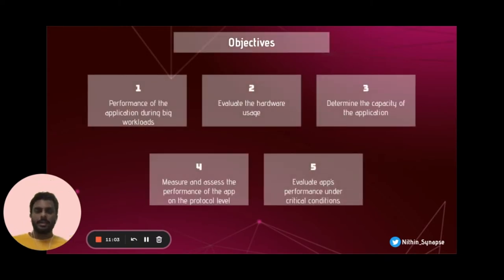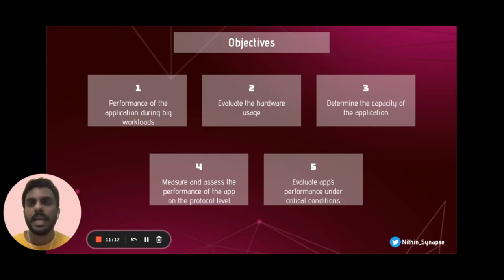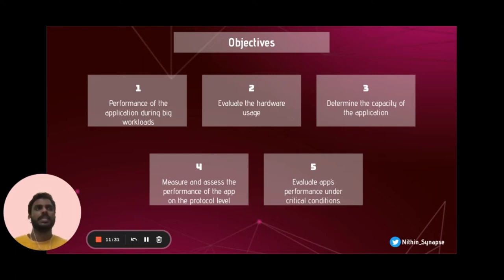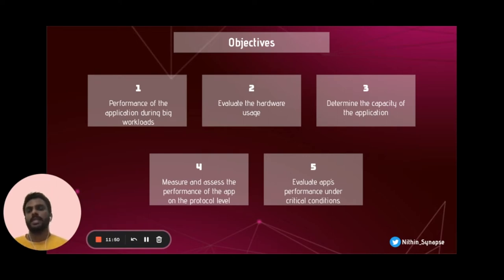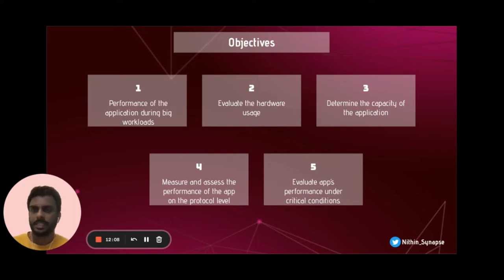There are certain objectives in doing mobile app performance testing. We want to ensure that our application works well under big workloads or user loads, evaluate hardware resource usage, determine the capacity of the application, measure performance at the protocol level, and evaluate our app's performance under critical conditions. We need to ensure that all network combinations work well with our application, and we have to understand how our app behaves on lower-spec devices. For all these factors, we need to understand which devices and OS versions our users mainly use, and define benchmark expectations.